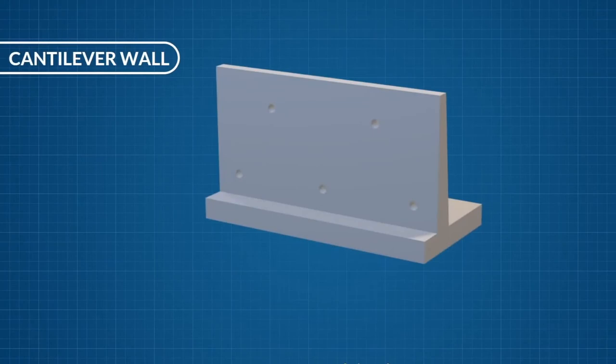The second type of wall is the cantilever wall. This is the most common type of retaining wall. These walls are typically used up to a depth of eight meters below ground level.